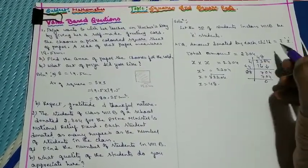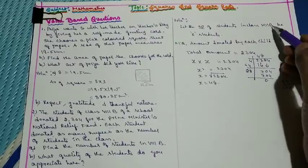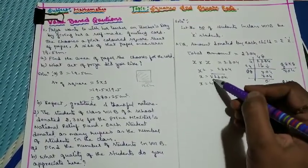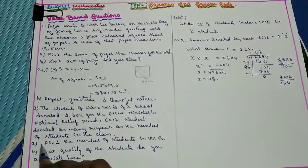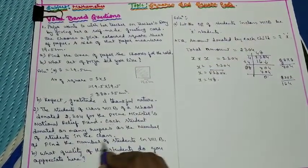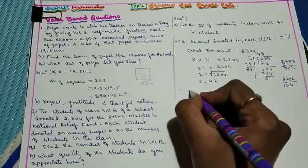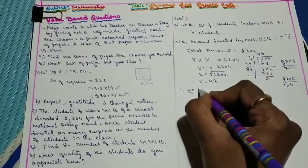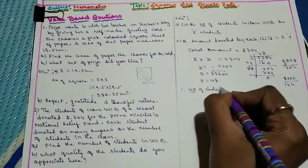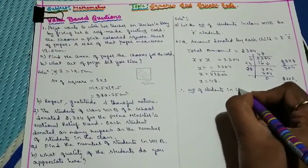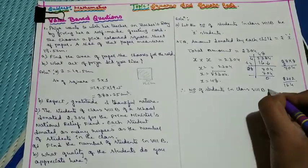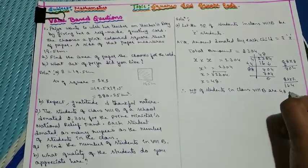There were 48 students in class 8th B and each child donated ₹48. Therefore, the number of students in class 8th B is 48 students.